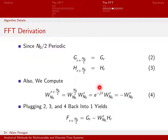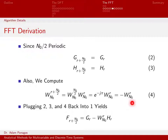e^{-jπ} is just a real-valued number and it's equal to -1. So this quantity, w_{n_0} raised to the r plus n_0/2, is actually just equal to negative w_{n_0}^r. It has this nice property where, by tacking on n_0/2, we actually get the negative of w_{n_0}^r. So if we use Equations 2, 3, and 4 and go back to Equation 1 on the previous chart...